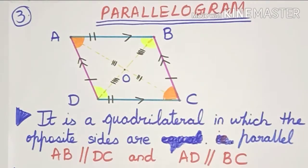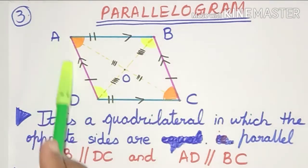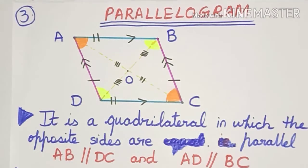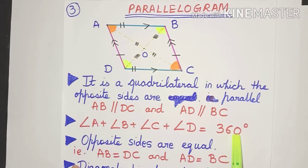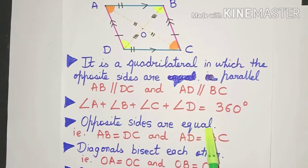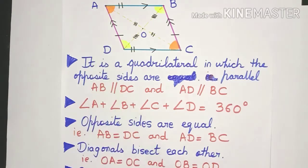The next type of quadrilateral is a parallelogram. A parallelogram is that quadrilateral in which the opposite sides are parallel to each other — AB is parallel to DC and AD is parallel to BC. Since it's a quadrilateral, the sum of all angles is 360 degrees. Because the opposite sides are parallel, they also end up being equal: AB is equal to DC and BC is equal to AD.